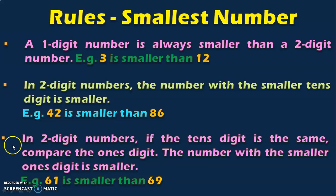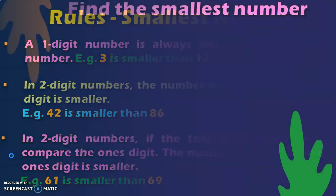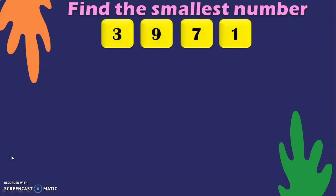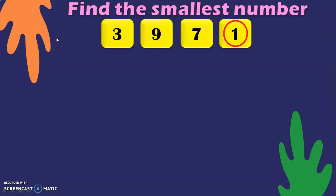Let us go into the exercises now. Find the smallest number. Here we are given four numbers: 3, 9, 7, and 1. All these are one-digit numbers. Which is the smallest number? 1 is the smallest number.